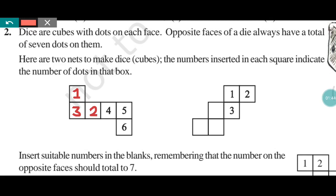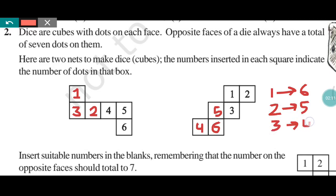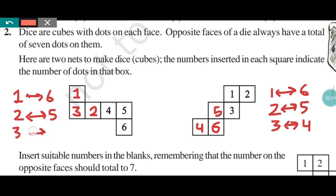Now the second net: this face is the opposite of 2, so we write 5 here. This is the opposite of 1, so we write 6. And this is the opposite of 3, so we write 4. When you fold, then 1 will be the opposite of 6, 2 will be the opposite of 5, and 3 will be the opposite of 4. In this way, you are required to fill this net.